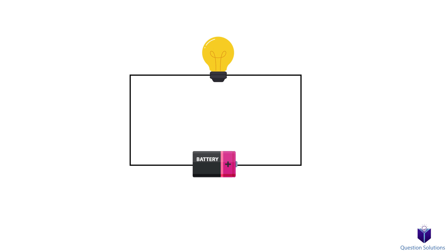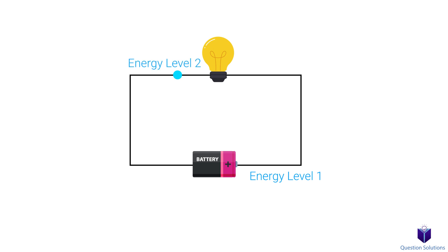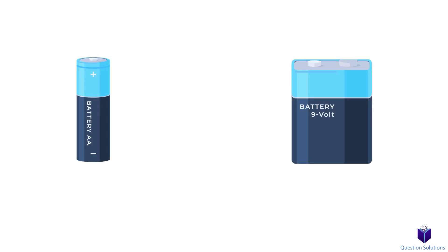Imagine we have a circuit with a unit charge. We measure the energy level at one point and label it energy level one, then move the charge to another point and label it energy level two. The difference between energy level one and energy level two is called voltage. In other words, voltage is the difference in energy level of a unit charge between two points — it is the electric potential difference between two points.